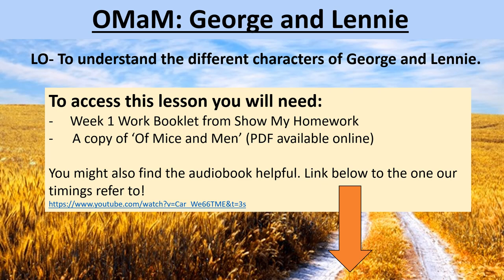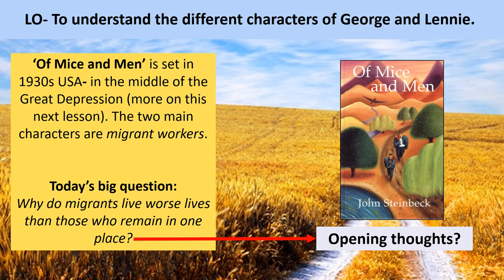So this is Lesson 1: George and Lenny. This lesson, we're going to understand the different characters of George and Lenny. Of Mice and Men by John Steinbeck was set in the 1930s in America, and this period of history was known as the Great Depression. We're going to learn more about the Great Depression next lesson. But the main thing you need to understand is that our two main characters, George and Lenny, are what we call migrant workers. Migrant comes from the word migration — to move around. These two men move around the country working in different places, and once their job is finished, they move on somewhere else. Today's big question is: why do migrants live worse lives than those who remain in one place?